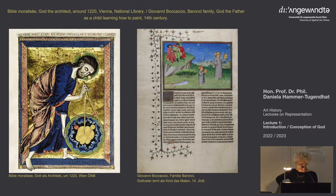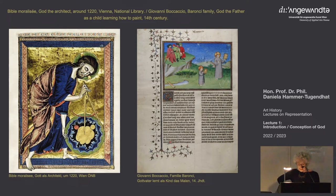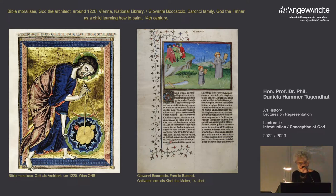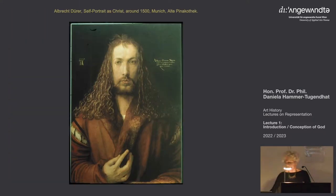You see here a very nice miniature showing God constructing the world like an architect. Or on the other side, a Boccaccio image of God as a child learning how to paint. And then we have the other way around — with Dürer, the identification of the artist with God.